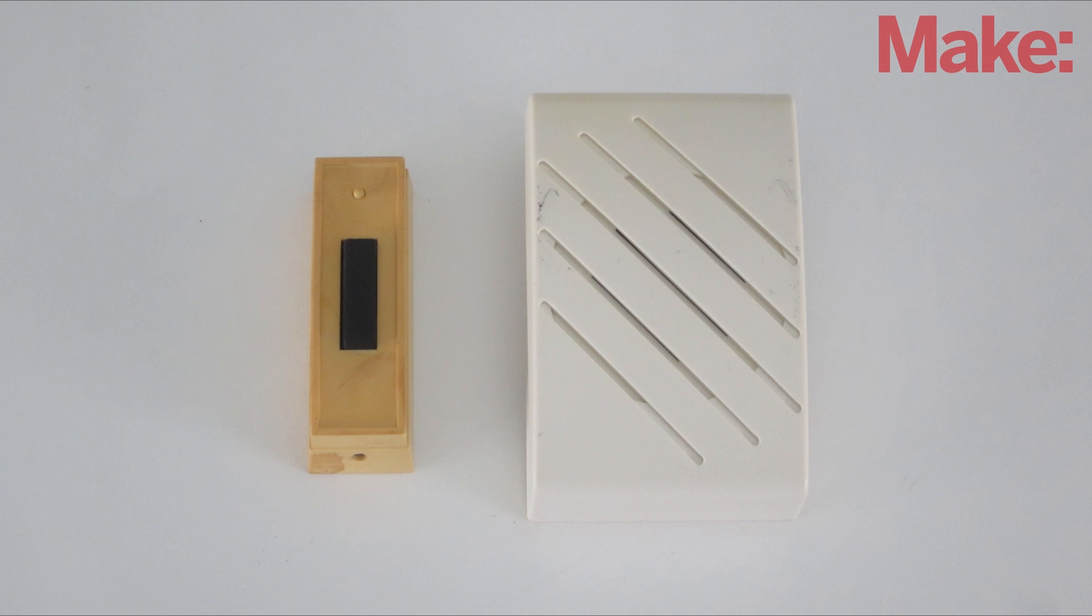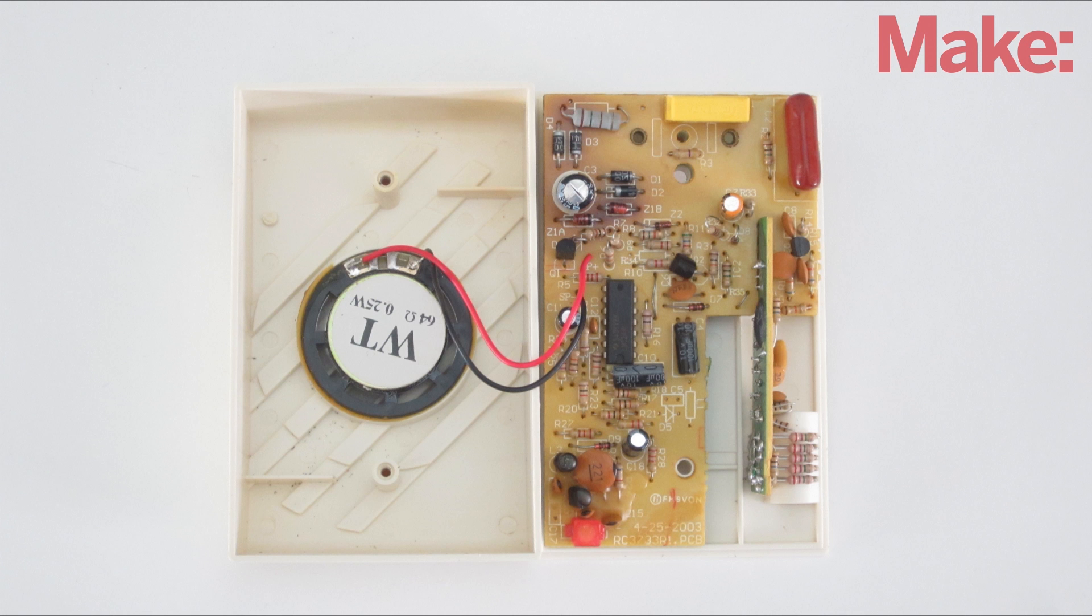Start by finding a wireless doorbell that plugs into an AC outlet. Then open up the housing and take a look at the circuit board.